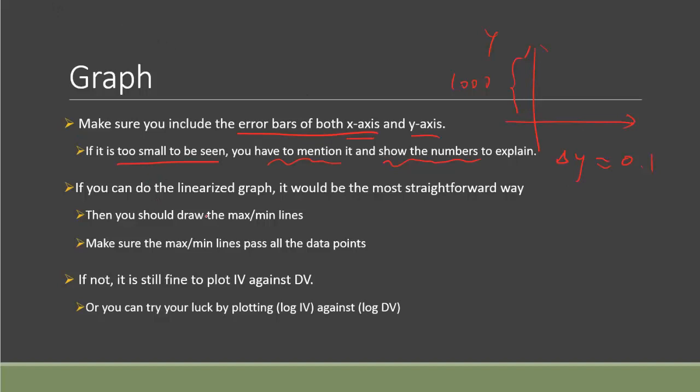Next, when you draw a graph, there could be mainly two types of graphs. One is linearized graph. So that is to say you successfully find out the framework equation and you find a way to linearize the equation itself. So like the previous video, I said in the process data table, you should have prepared those values. And so you can just plot it out. So this should be the most straightforward way.